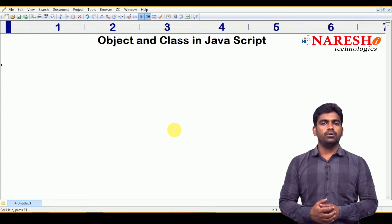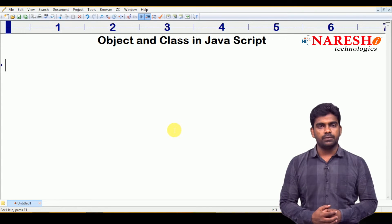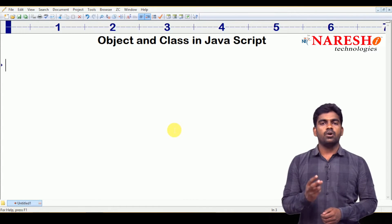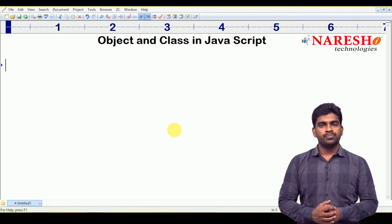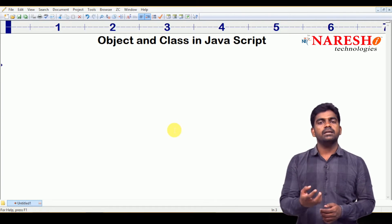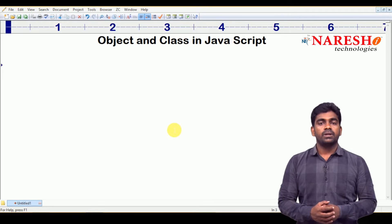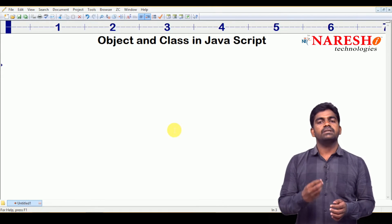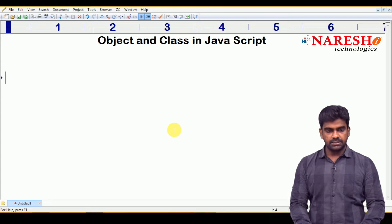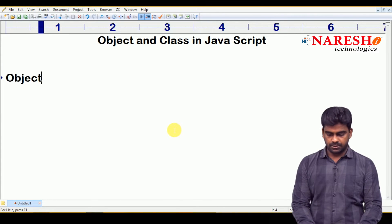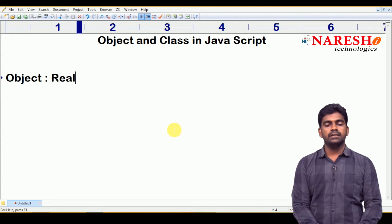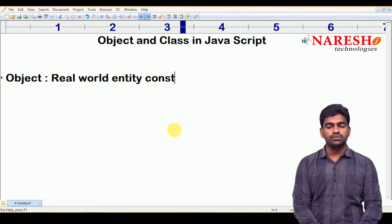Any object-oriented programming language has two common things: objects and classes. So, generally what is an object? It is just a real-world entity. A real-world entity is having three things. Any object you consider is just a real-world entity that consists of...